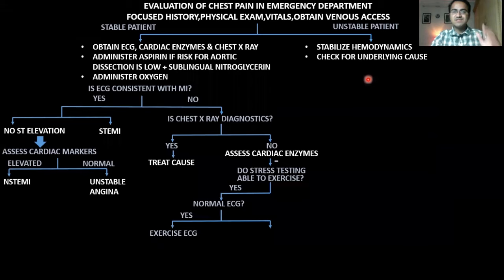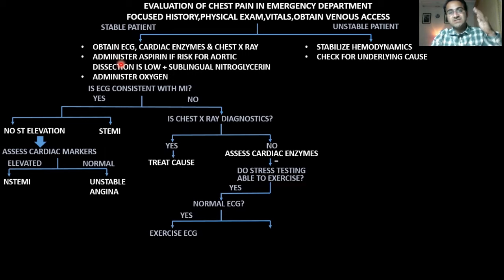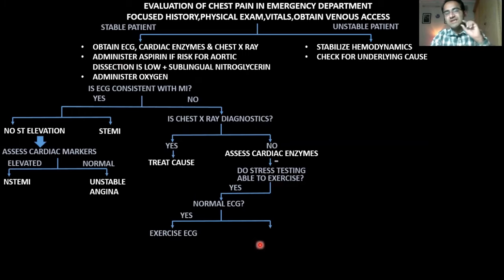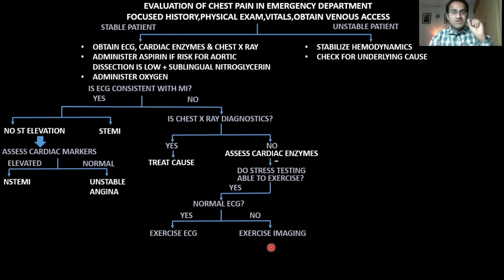If the patient is able to exercise but the previous ECG was not normal — for example, the patient had an MI previously and there are pathological Q waves — there is dead tissue in the heart. In that situation, it is not good to go for exercise ECG; it is better to go for exercise imaging. In exercise imaging, you do an echocardiogram and identify the dead part of the heart that is not moving.